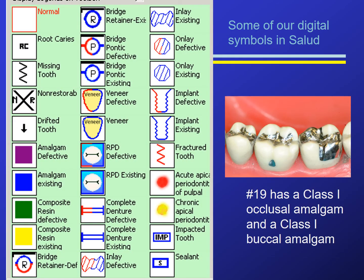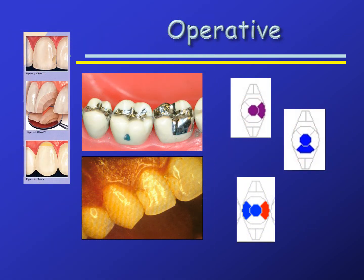On our dentoform patient, number 19 — the first molar — has an occlusal amalgam and a buccal pit amalgam. On the odontogram, we would use blue for an existing amalgam on both the buccal and the occlusal portions. For operative procedures, we use the appropriate color and click on the portion of the circle to indicate which surface or surfaces are restored or have caries.